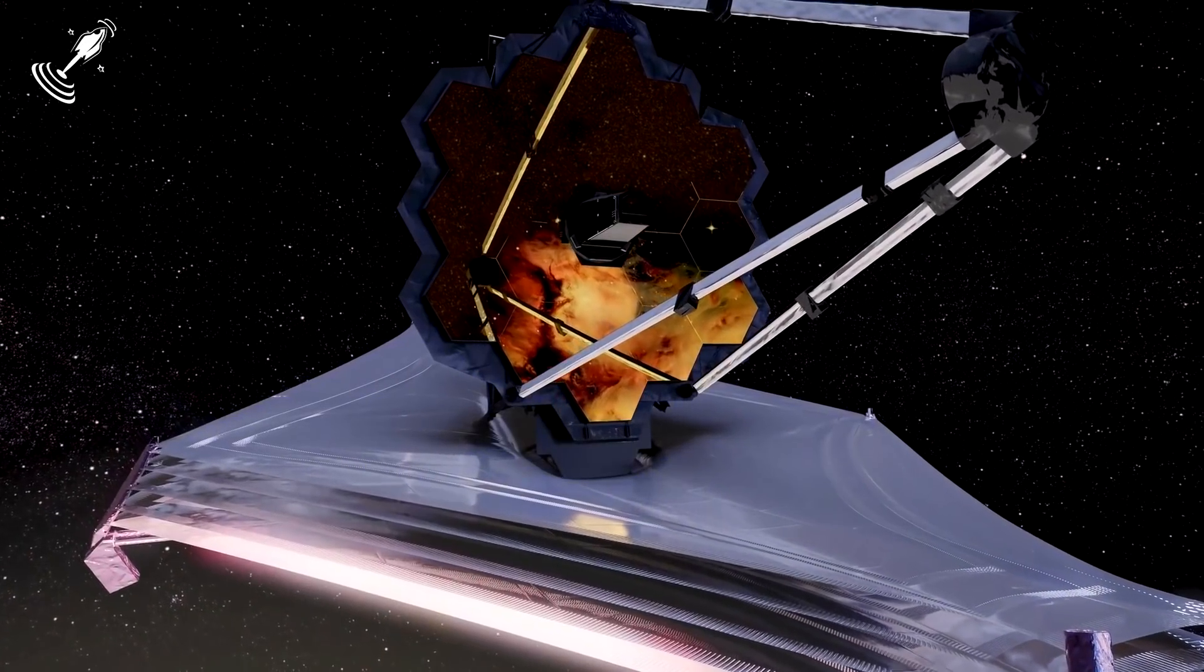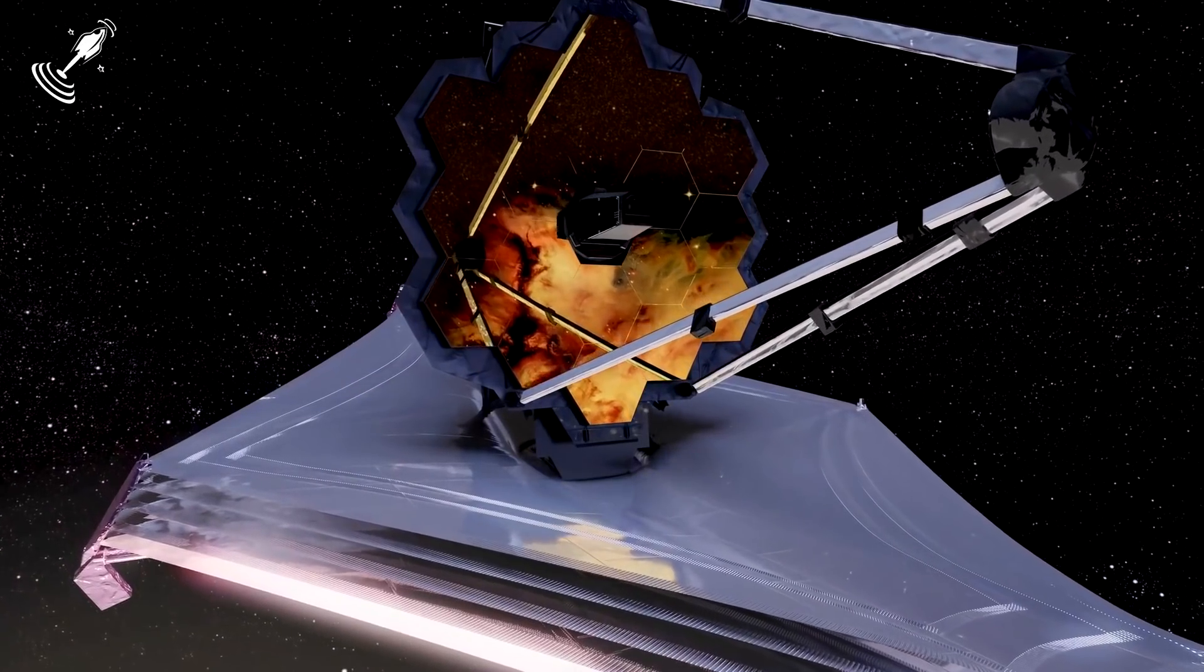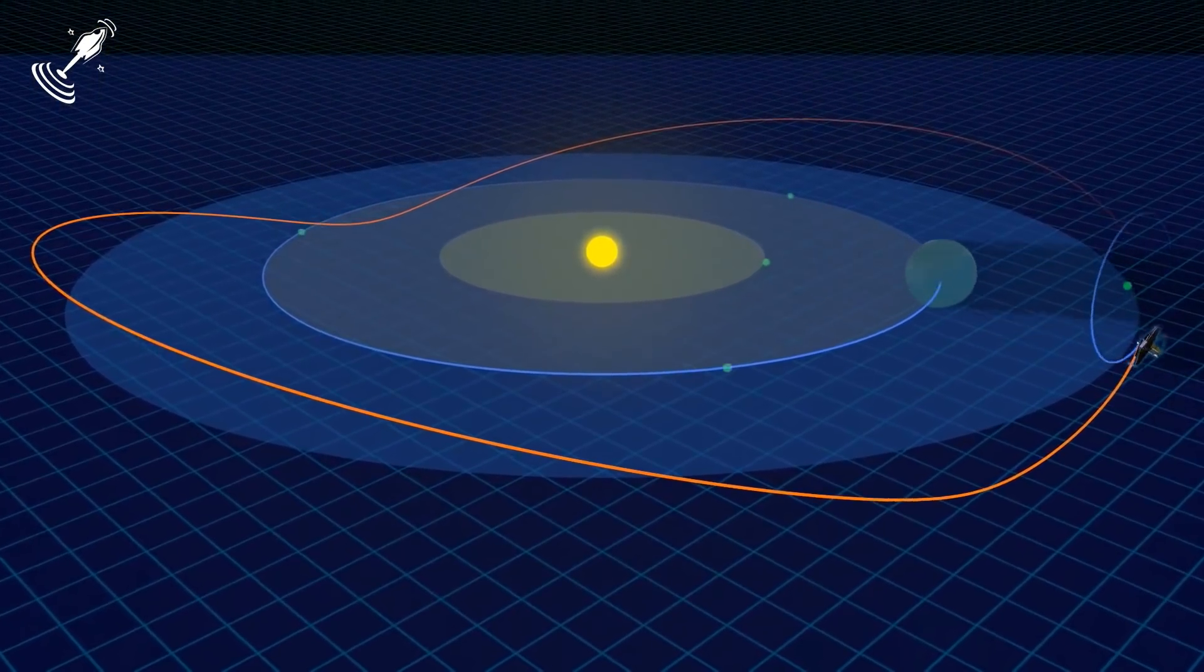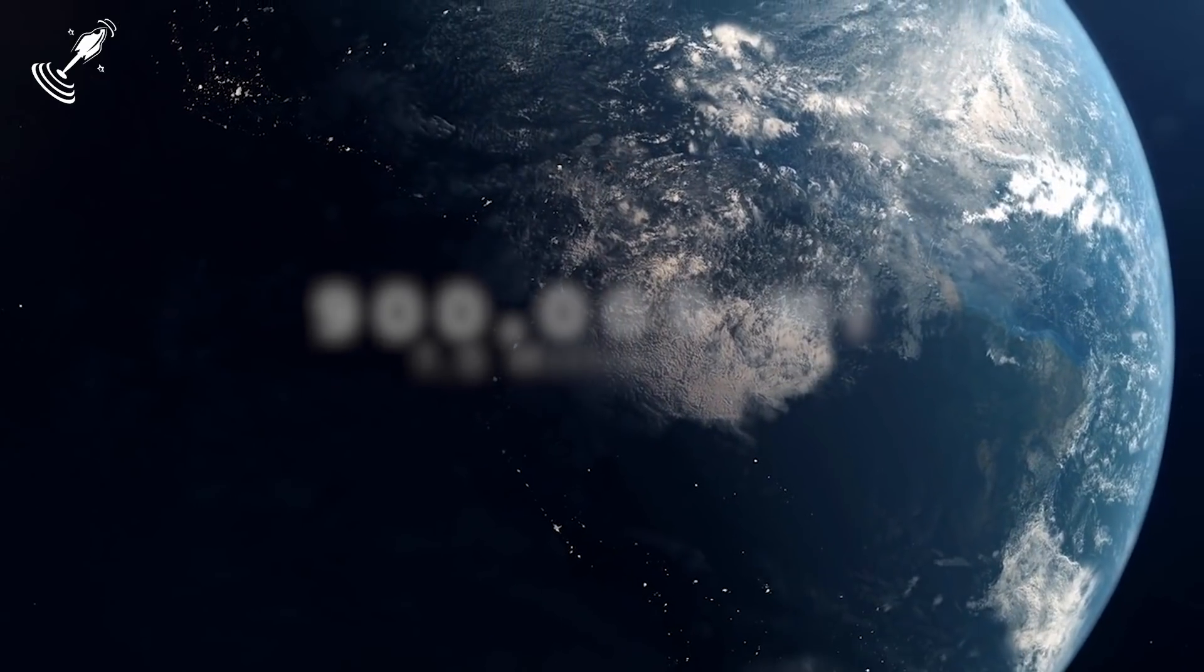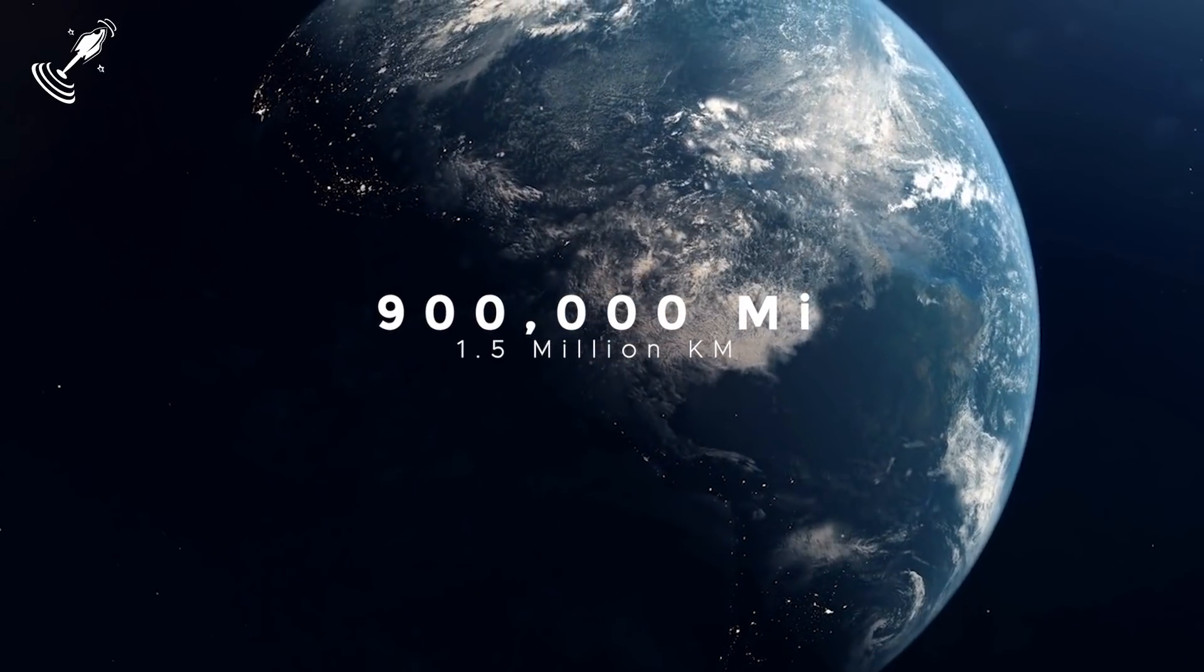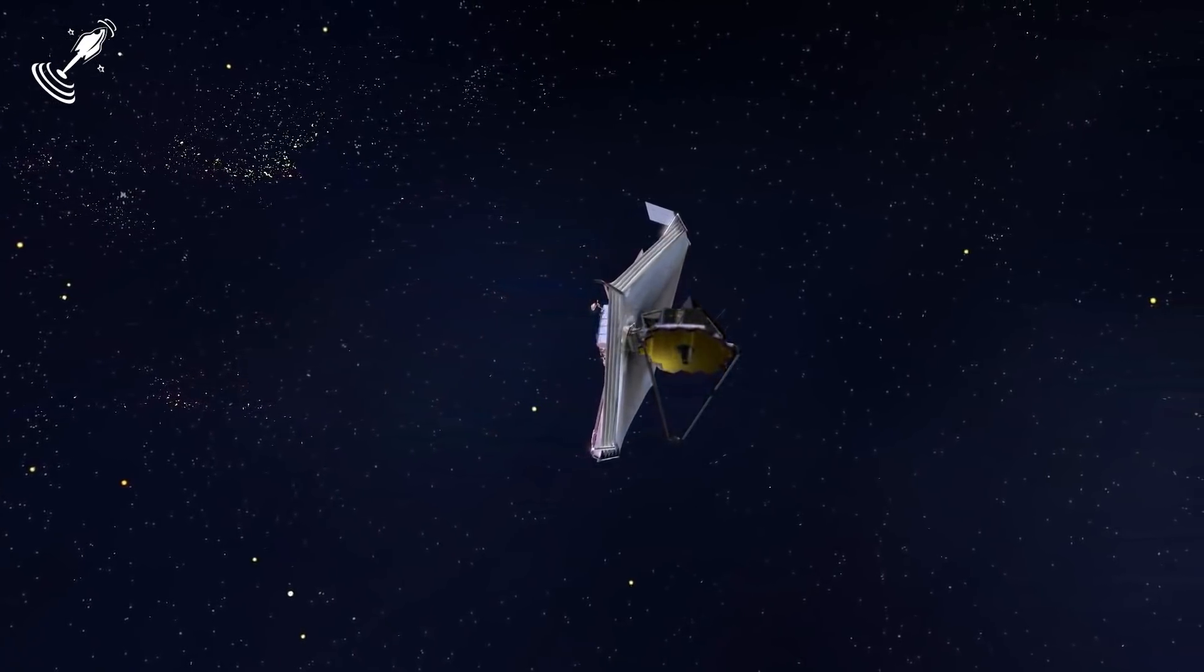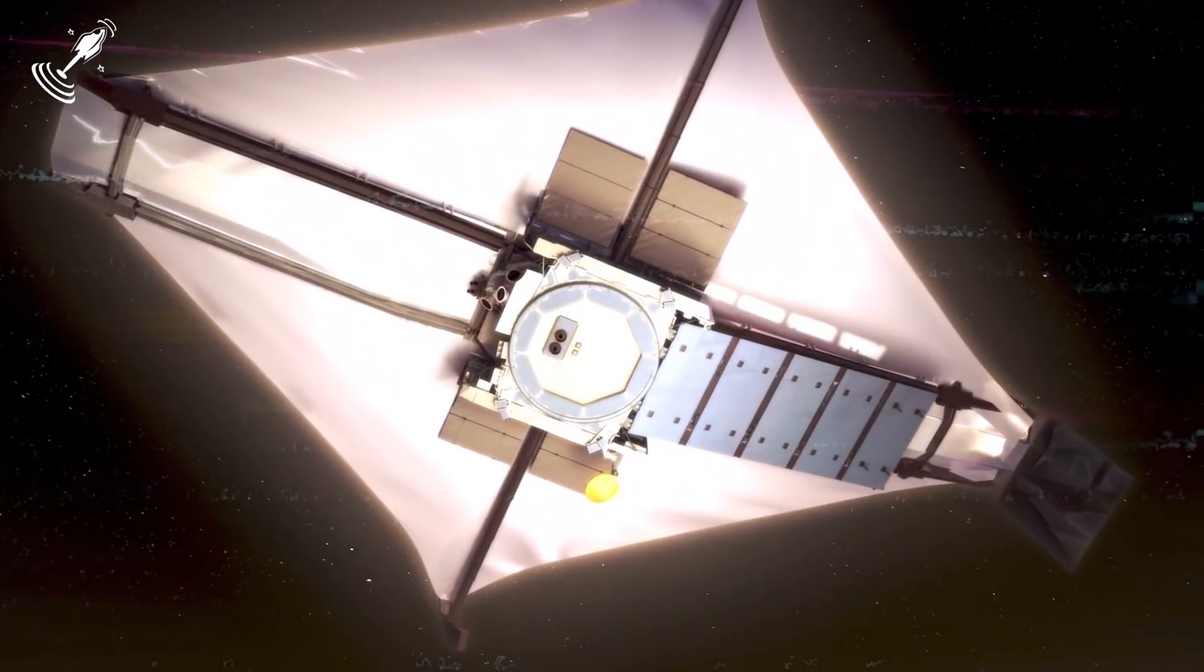On January 24th, Monday, the Webb Telescope finally arrived at its new home in space, Lagrange Point 2, which is a gravitationally stable spot over 900,000 miles from our home planet. The arrival took place over a month-long journey that created the 29 Days of Terror, which have come to an end.